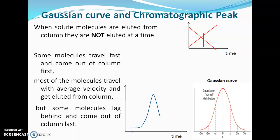Some molecules will get lagged behind and come out of the column last — they will form the end part of the peak. In this way a chromatographic peak is obtained, and this is the ideal shape. It resembles a Gaussian curve. When we see a compressed view of this chromatographic peak, this is the relationship between the Gaussian curve and a chromatographic peak.